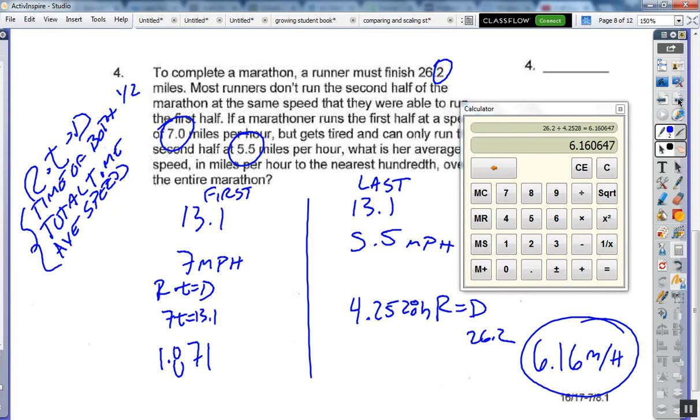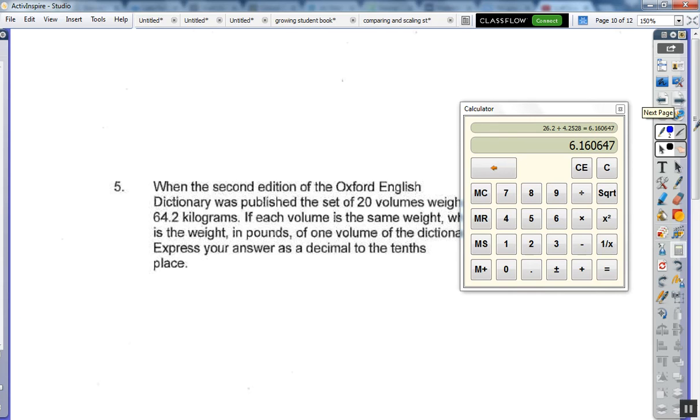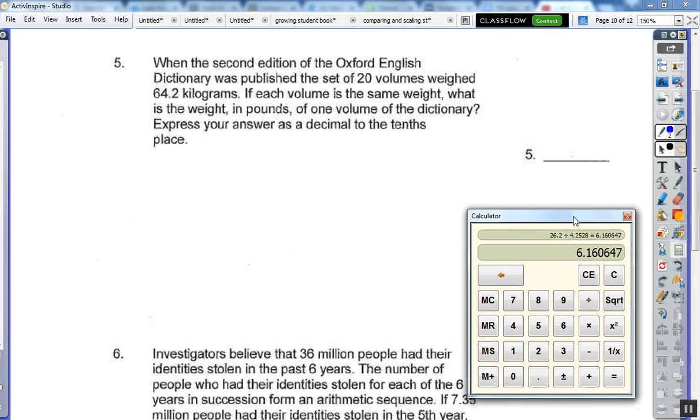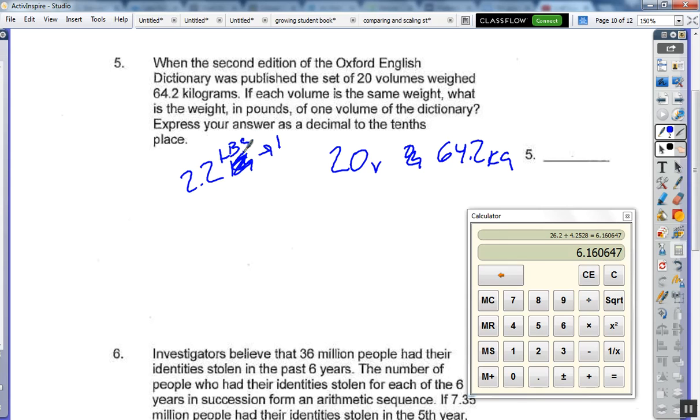Alright, last two problems, maybe. Five times. The OED, Oxford English Dictionary, is 20 volumes and they weigh 64.2 kilograms. They all weigh the same in pounds. And this is the thing you have to know: there are 2.2 pounds in 1 kilogram. So we simply take 64.2, divide it by my 20 volumes, and then multiply it by my 2.2, which gives me a grand total of 7 point... and it says the nearest tenth, 1. Excellent.